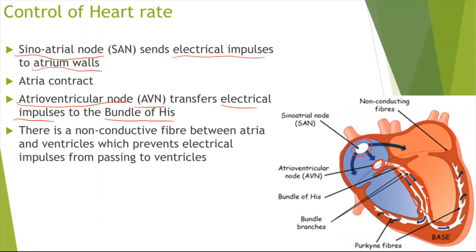You need to be aware that there is a non-conductive fibre between the atria and the ventricles. This non-conductive fibre is what prevents the electrical impulses from passing straight from the atria to the ventricles. So instead, the impulses have to pass down the bundle of His.